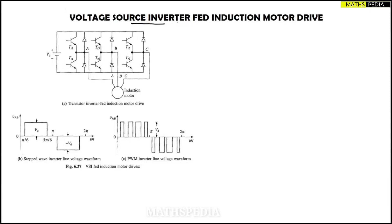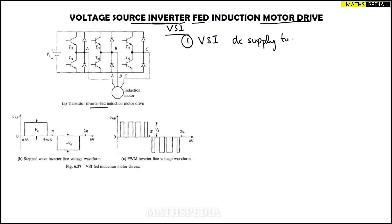In this video we will be discussing the voltage source inverter (VSI) fed induction motor drive. VSI stands for voltage source inverter. The first key point to mention is what VSI does: it basically converts the DC supply to a variable frequency AC supply. This is the first point you have to mention — that VSI converts DC to variable frequency supply.